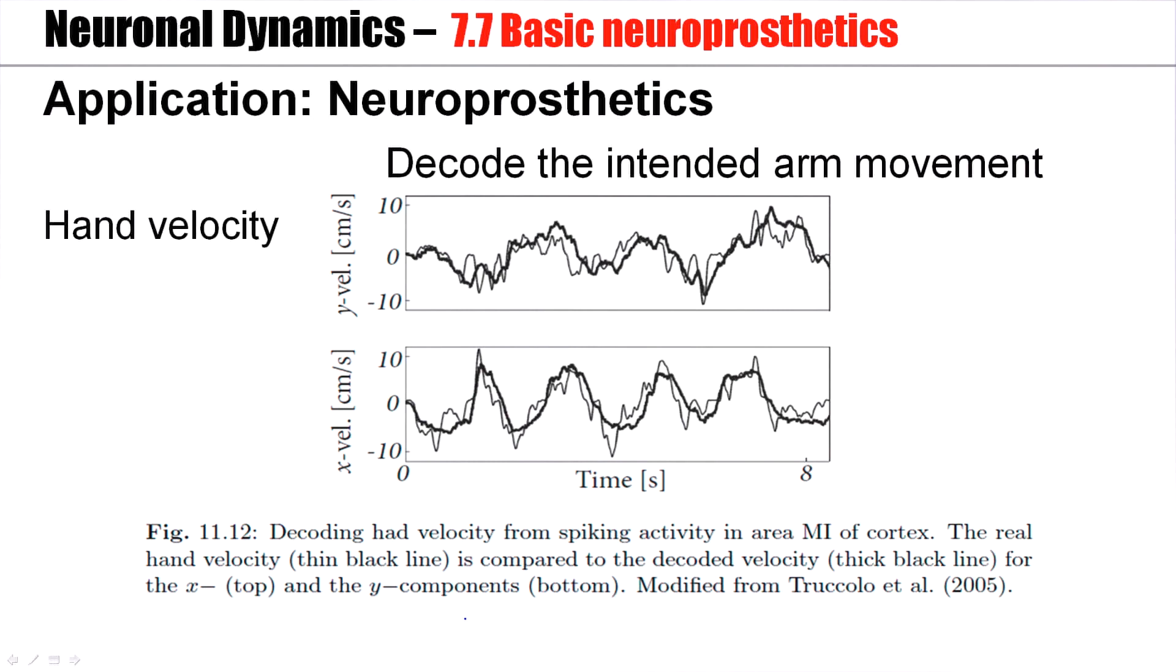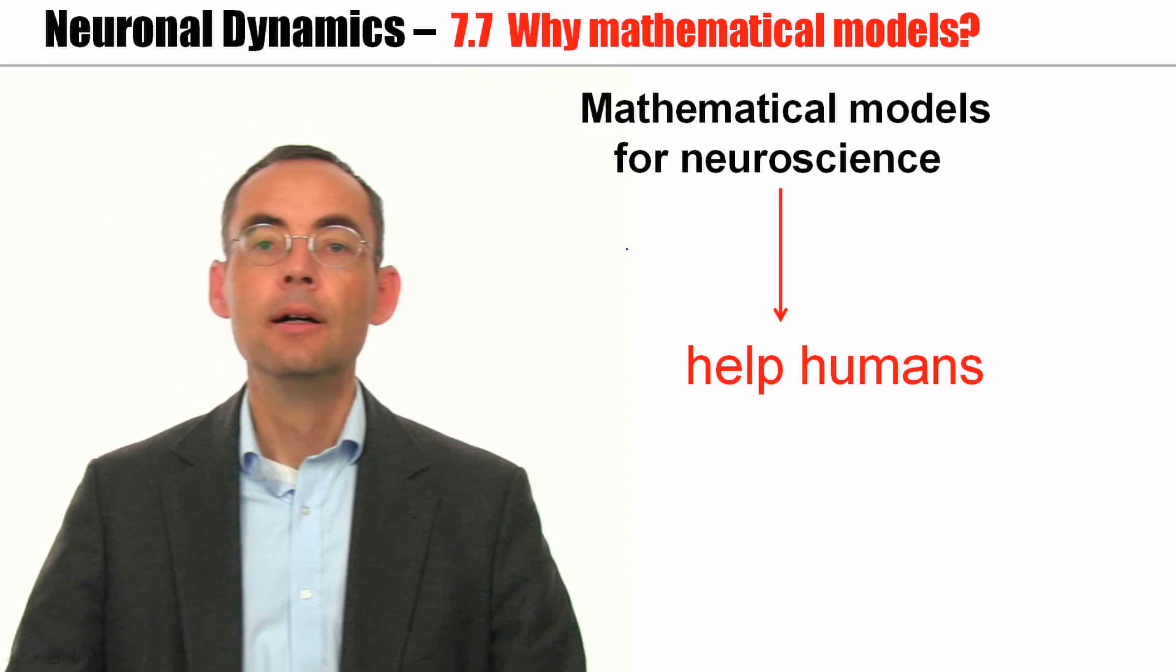And here is an example now in M1 cortex of a monkey. While the monkey performs some hand movement, you can record the vertical velocity of the hand and the horizontal velocity of the hand while measuring spikes in the brain. Later, you just look at the spikes and you try for a new movement to predict the intended arm movement. And you see that the actual movement and the intended movement are very, very similar.